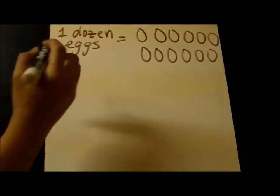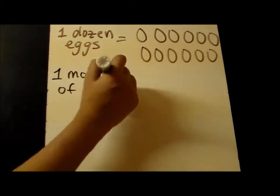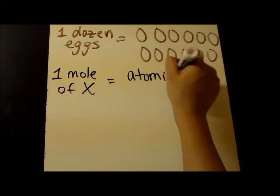A mole is just like any other counting unit. For example, one dozen eggs corresponds to 12 whole eggs, while one mole of any element corresponds to the atomic mass of that element in units of grams.